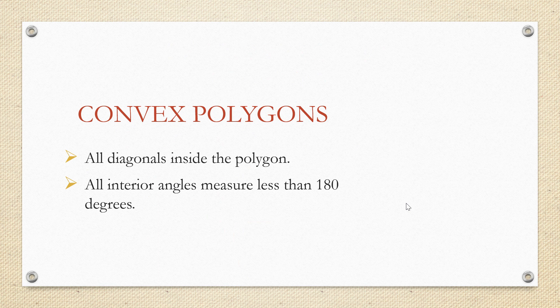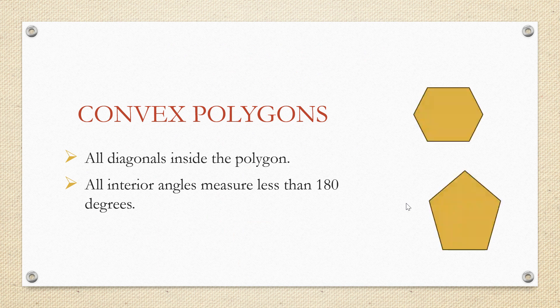Convex polygons. Polygons are also classified depending upon few other characteristics. If a polygon has all diagonals inside the polygon, along with that all interior angles measure less than 180 degrees, such polygons are called convex polygons. The regular shapes that we see like triangle, square, rectangle, pentagon, all these are convex polygons.